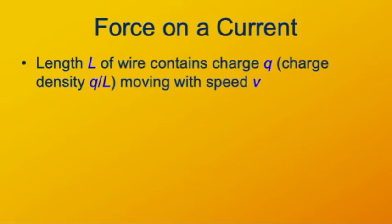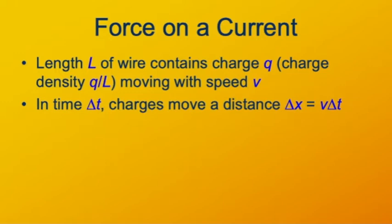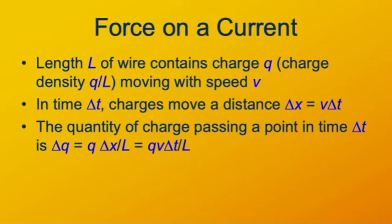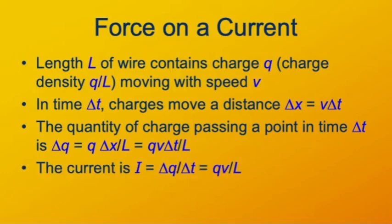Here we'll imagine a current which has a number of charges moving in the same direction. If we imagine a length L of wire that contains some moving charge q, this means a charge density of q over L — so many coulombs per meter — moving with a speed v. In some time delta t, the charges move a distance delta x, which is v delta t. The current is the amount of charge passing across a point in unit time. The amount of charge delta q is the fraction of the total charge that travels the distance delta x — the charge residing in a distance delta x — which is delta x times the charge density q over L. So the current, which is delta q over delta t, gives us qv over L.